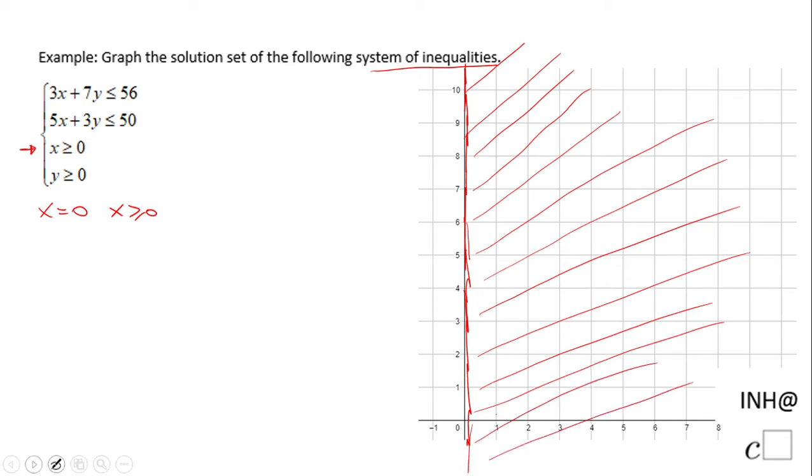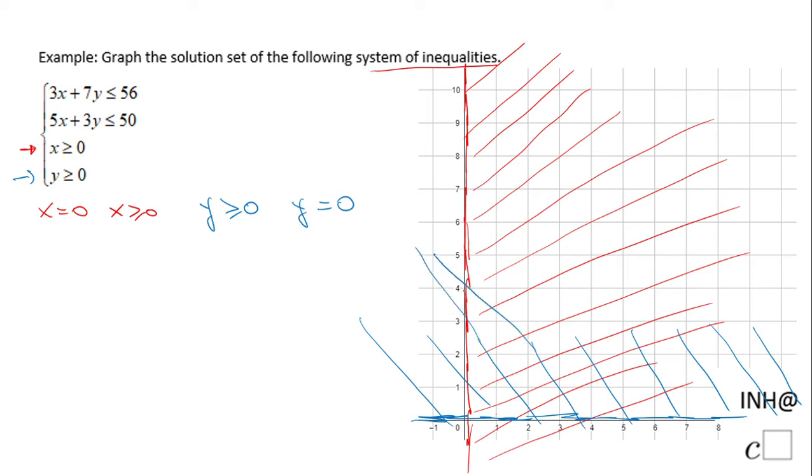Then we're gonna move to the next one, which is y greater or equal zero, which is very similar. I'm gonna graph y equals zero first, which is this blue line, the x-axis. The solution set is going to be all these numbers that are on top of this blue line.